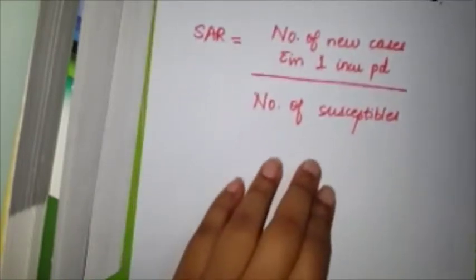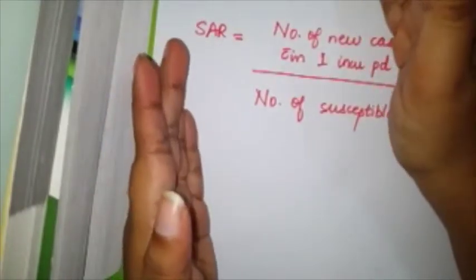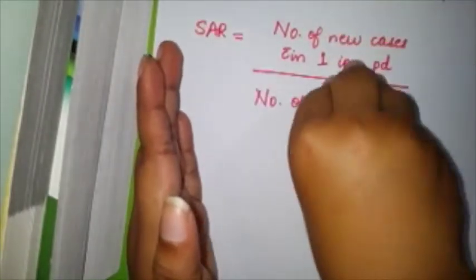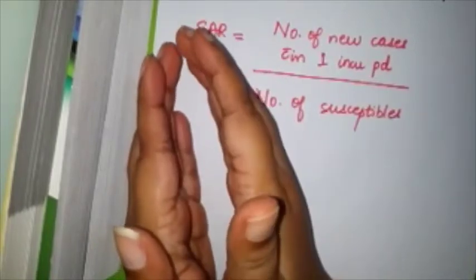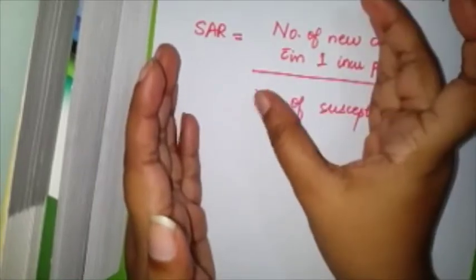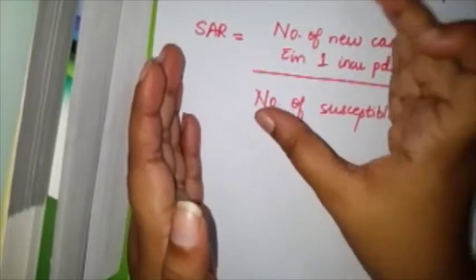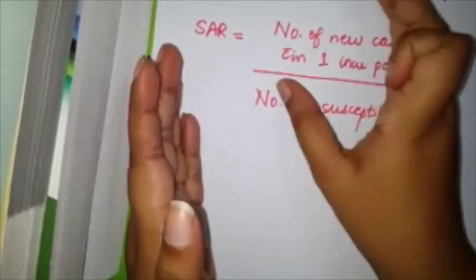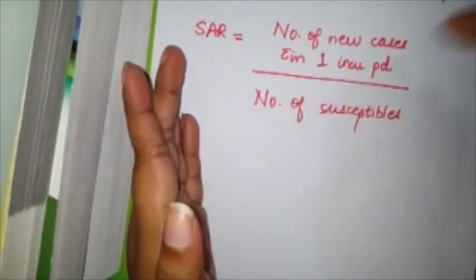Let's say there are 100 persons in one particular area. Few of them were vaccinated, so even if the primary case came in that area, it could not affect the vaccinated. Out of the remaining persons who were not vaccinated, who are susceptible to infection, how many people develop the infection within one incubation period?